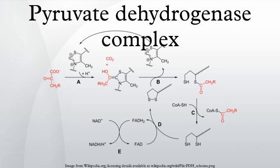PDC is a large complex composed of multiple copies of three or four subunits depending on species. In Gram-negative bacteria, for example Escherichia coli, PDC consists of a central cubic core made up from 24 molecules of dihydrolipoidal transacetylase. Up to 24 copies of pyrovate dehydrogenase and 12 molecules of dihydrolipoidal dehydrogenase bind to the outside of the E2 core.